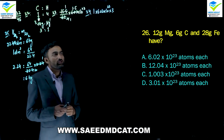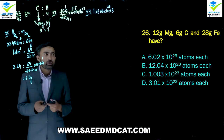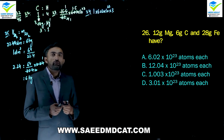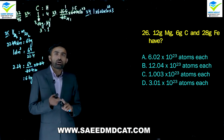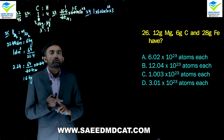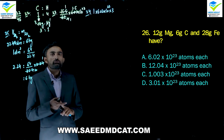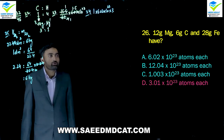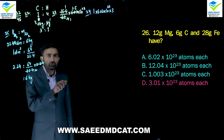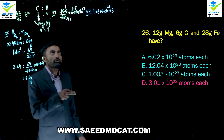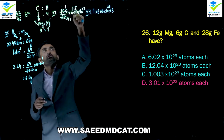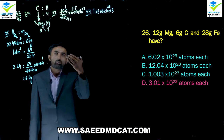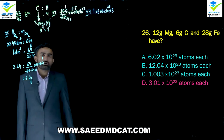Question 26: 12 g of magnesium (molar mass 24) = 0.5 mol; 6 g of carbon (molar mass 12) = 0.5 mol; 28 g of iron (molar mass 56) = 0.5 mol. All are half moles. In half a mole: 0.5 × 6.02×10²³ = 3.01×10²³ atoms each. Delta option is correct.